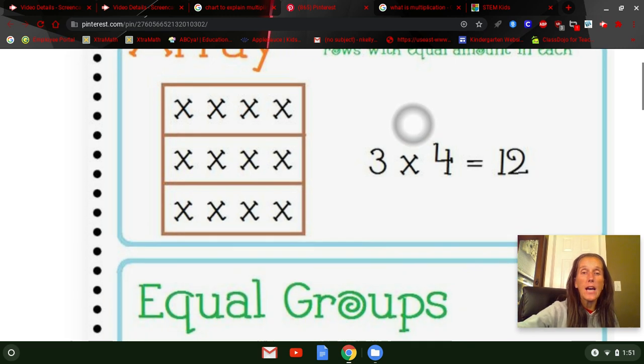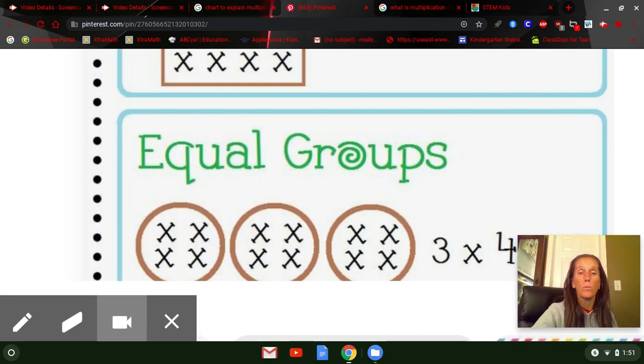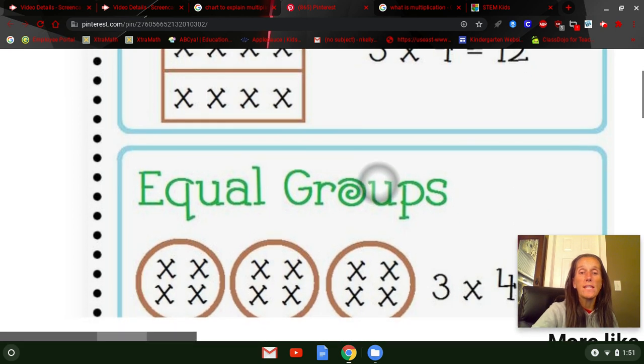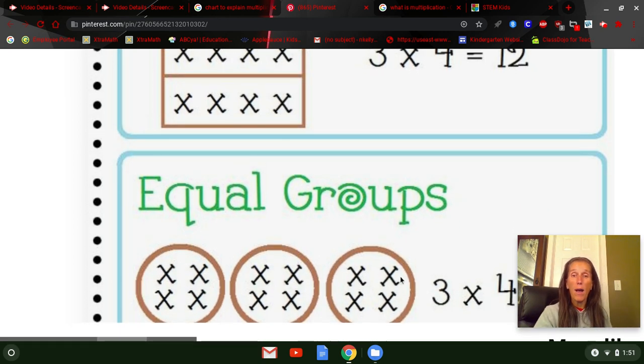Let's look at another way of looking at it, equal groups. So in this case, it's the same problem we're seeing here, three times four. But in this case, we're seeing them as groups in the circles instead of in rows. But essentially, it's the same problem. There are three groups. There are four things in each group. So three times four equals 12.